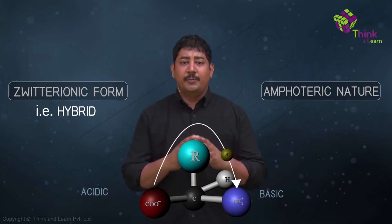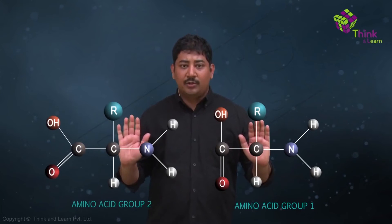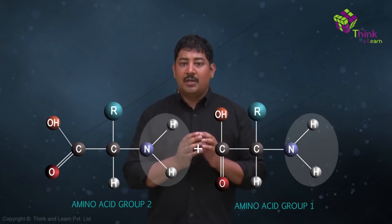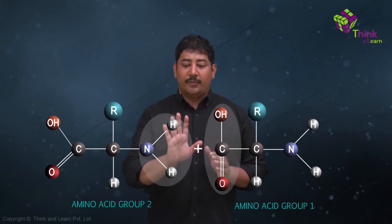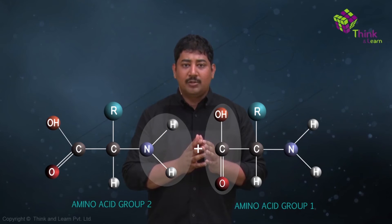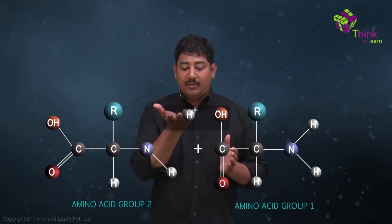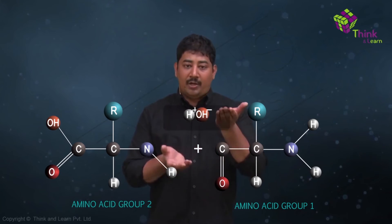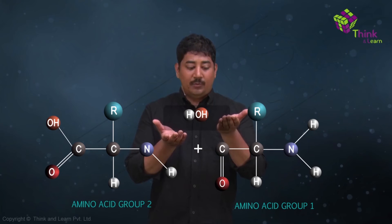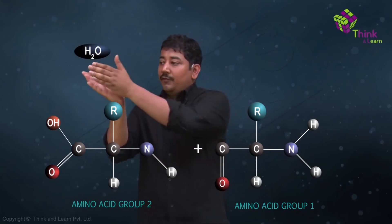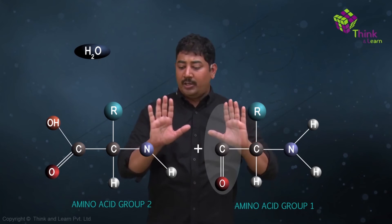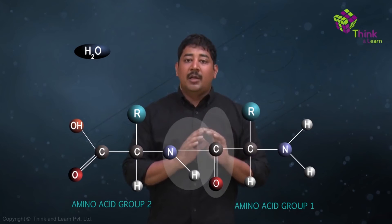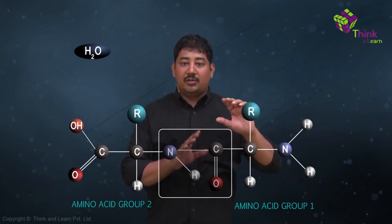Since amino acids contain both an acidic and a basic group in the same molecule, most amino acids are said to be amphoteric in nature. So how do amino acids come together to form a protein? Consider two amino acids: amino acid 1 and amino acid 2. They both have their amino groups and carboxylic groups. Between the carboxylic group of amino acid 1 and the amino group of amino acid 2, we can remove a water molecule — taking a hydrogen from the amino group of amino acid 2 and a hydroxyl from the carboxylic group of amino acid 1. Together, when they are eliminated, they form a water molecule, and the remaining groups form a bond known as a peptide bond.